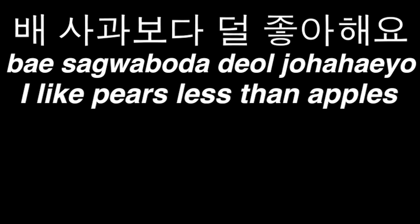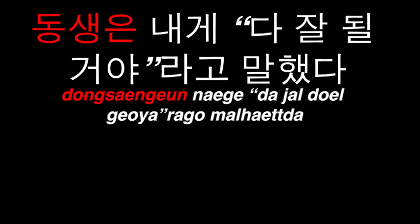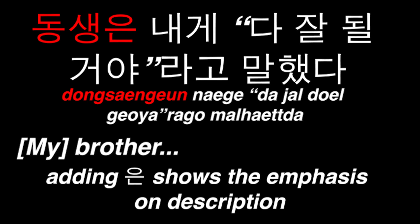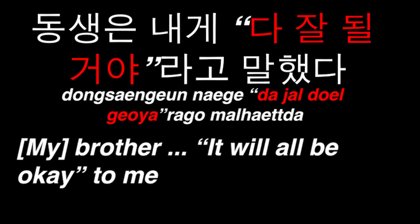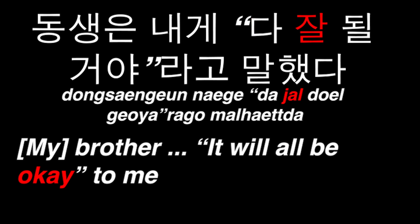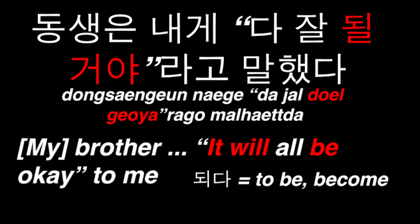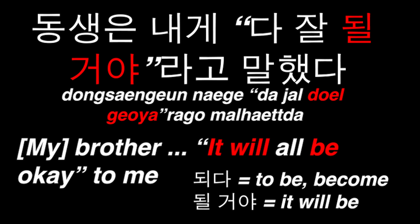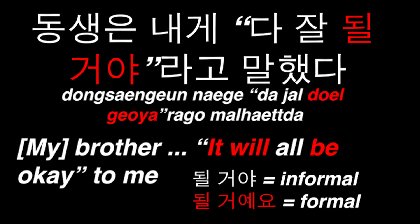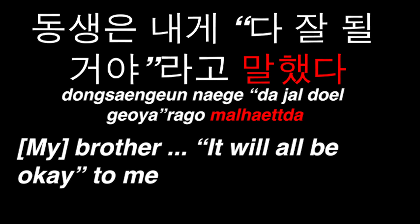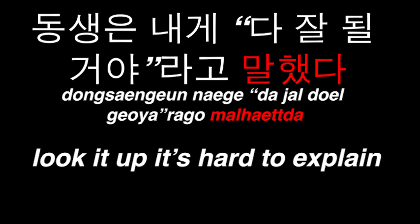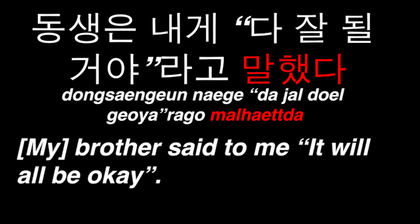동생은 내게 다 잘 될 거야 라고 말했다. 동생 means 'brother,' and the subject particle shows we're more interested in what the brother said. 내게 is an abbreviation of 나에게, meaning 'to me.' 다 잘 될 거야 means 'it will all be okay' — 다 meaning 'all,' 잘 meaning 'well/okay,' and 될 거야 meaning 'it will be.' 되다 can mean 'to become' as well, and here it's conjugated in the future tense. To make it more formal: 될 거예요. Attached to 거야 is 다고, which acts like a verbal quotation mark marking indirect speech, attached to the verb of the quote. 말했다 is the verb 'to say' in the past tense. The whole sentence means: 'My brother told me everything will be okay.'